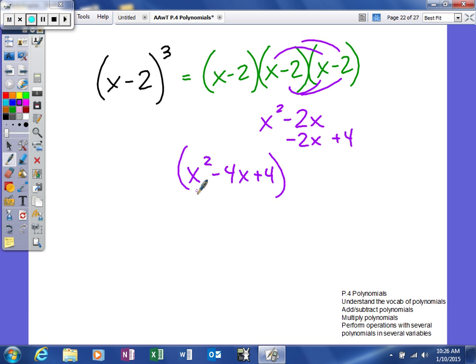I'll take that X, and multiply it by all three. X to the third minus 4X squared plus 4X. And then lastly, I'm going to take this term, negative 2, and multiply it by all three also.